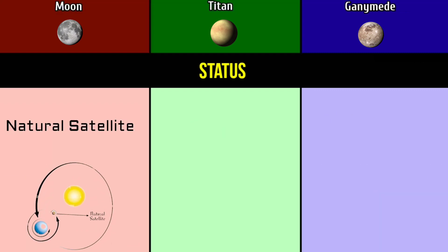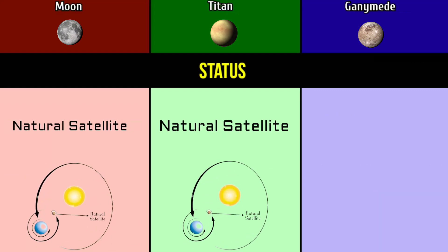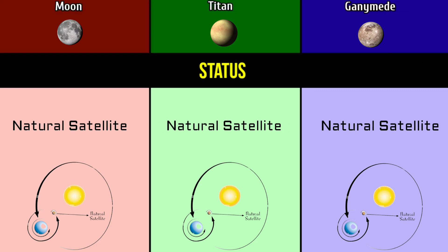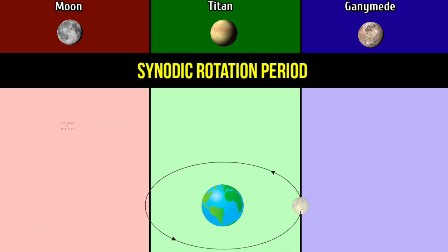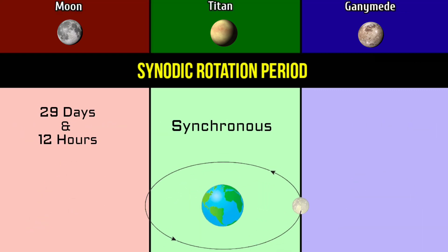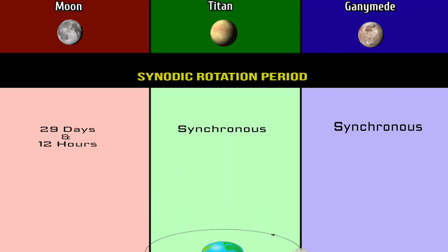Status: natural satellite for all three. Synodic rotation period: 29 days and 12 hours for the Moon; synchronous for Titan; synchronous for Ganymede.